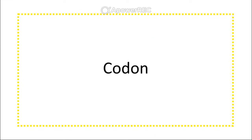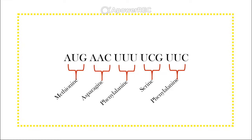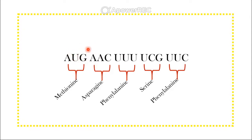Codons are the three-letter words that code for amino acids, a start codon, or stop codons. Any amino acid sequence can be divided into threes beginning with the start codon — AUG in mRNA (or ATG in DNA) — which can also encode the amino acid methionine. The ribosome always knows to start at the start codon, and shifting the reading frame would produce a completely different protein sequence.